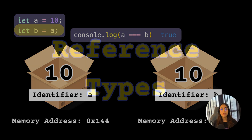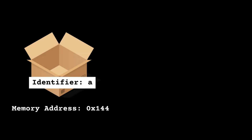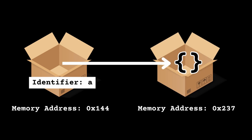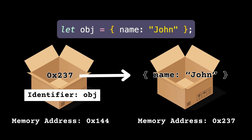Now let's see how objects are stored in memory. Objects are often called reference types in JavaScript. Unlike primitive types, instead of storing the value directly inside the variable, objects store a reference to that value somewhere else in memory. That's why they are called reference types. When you create let obj = { name: 'john' }, some memory is allocated to this object value that stores the properties and methods associated with it.